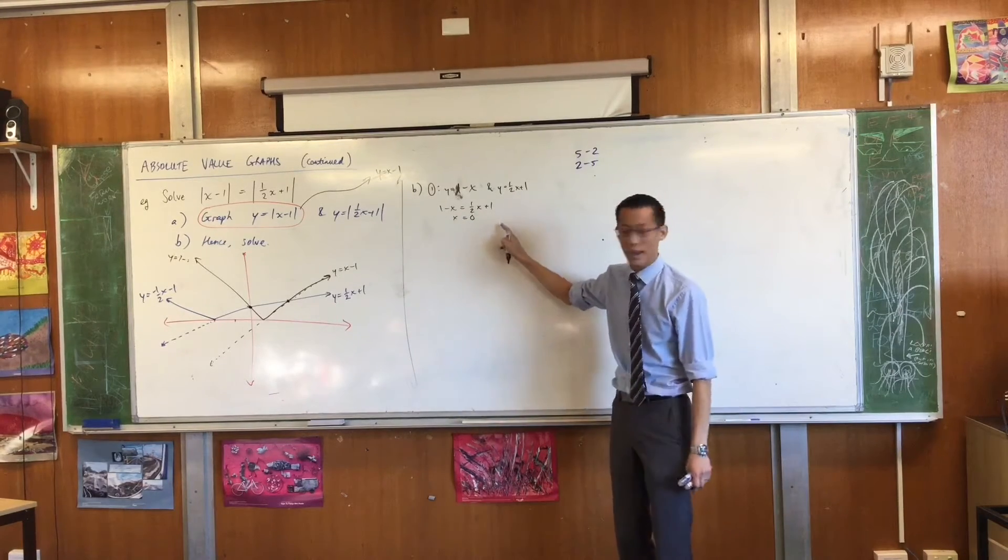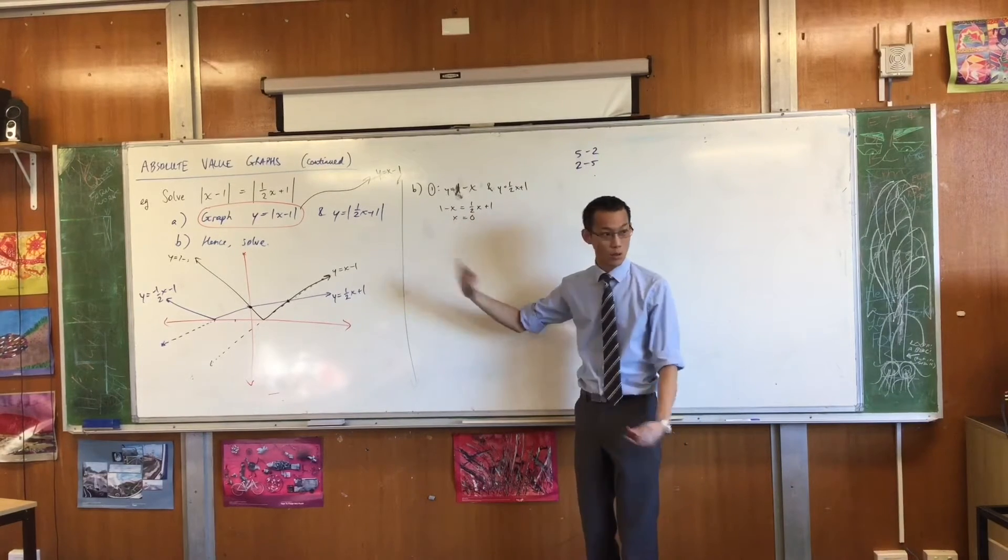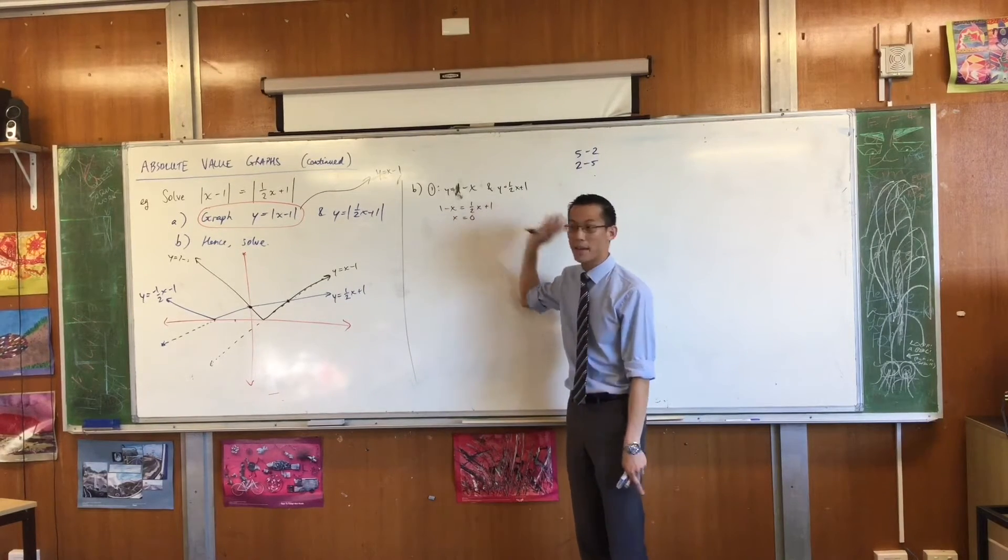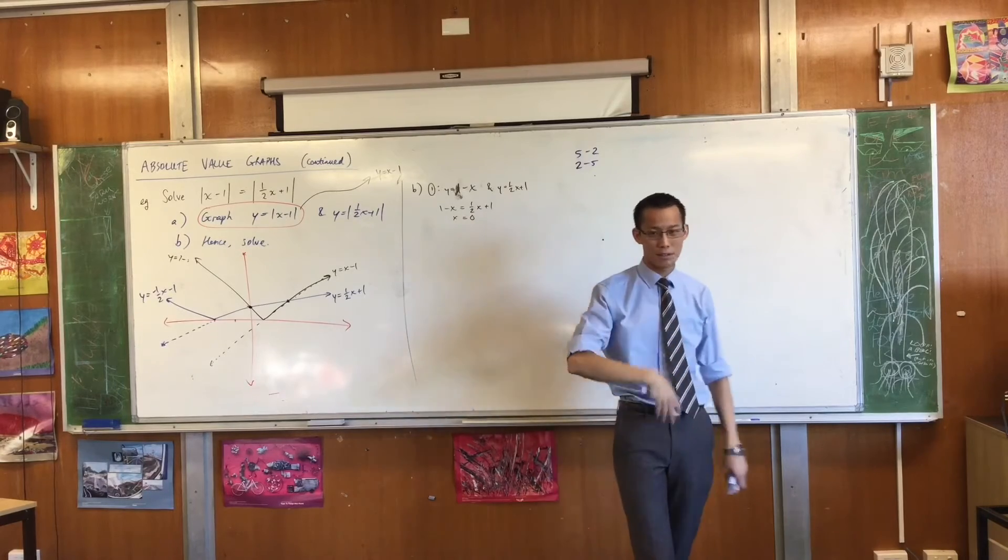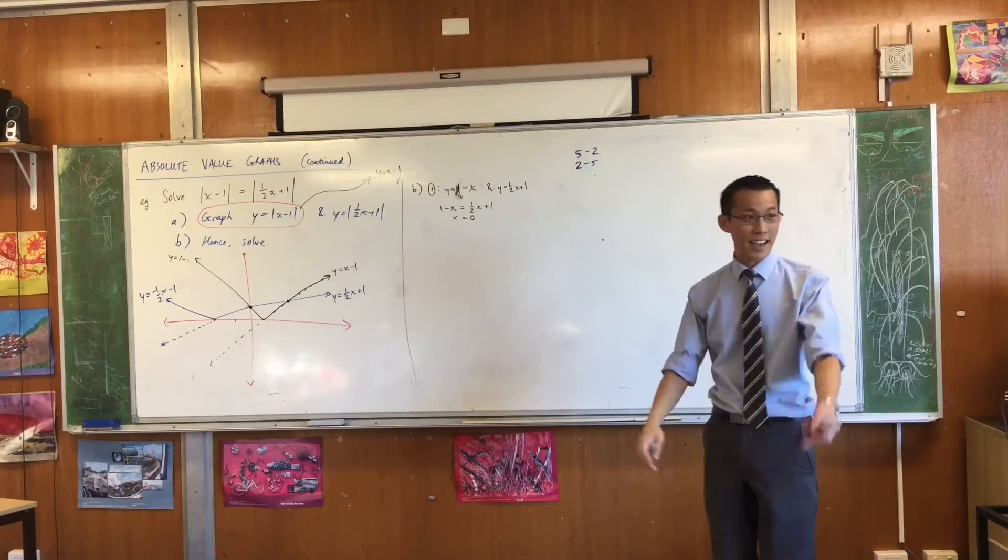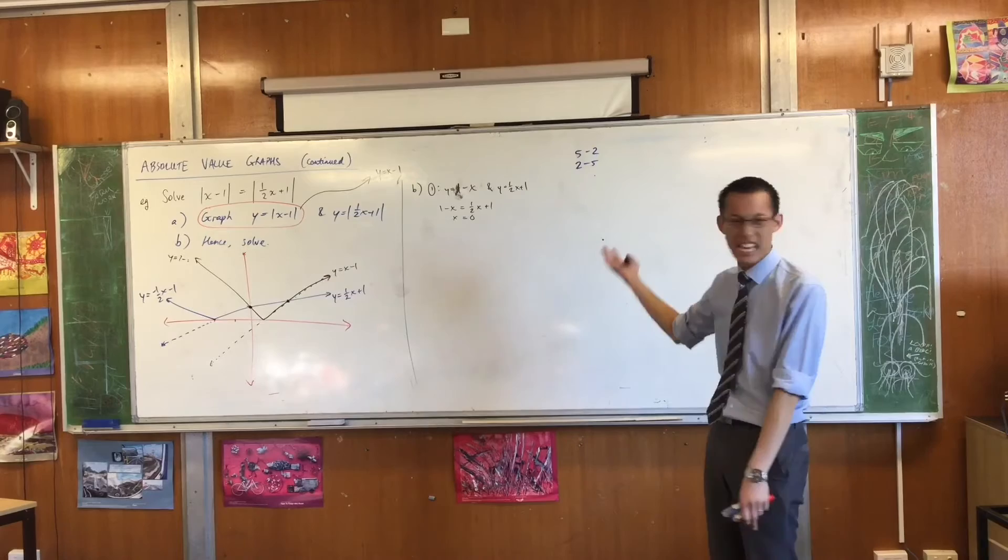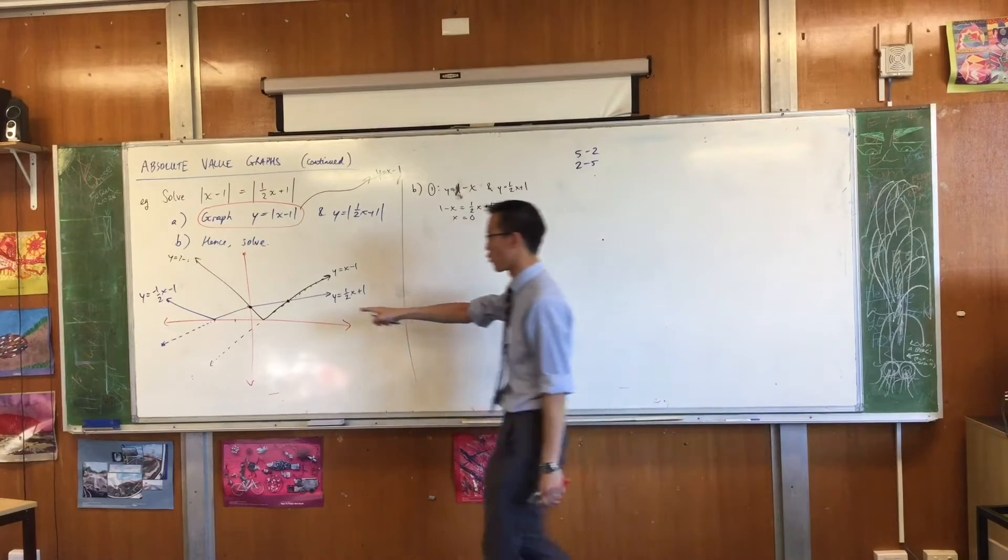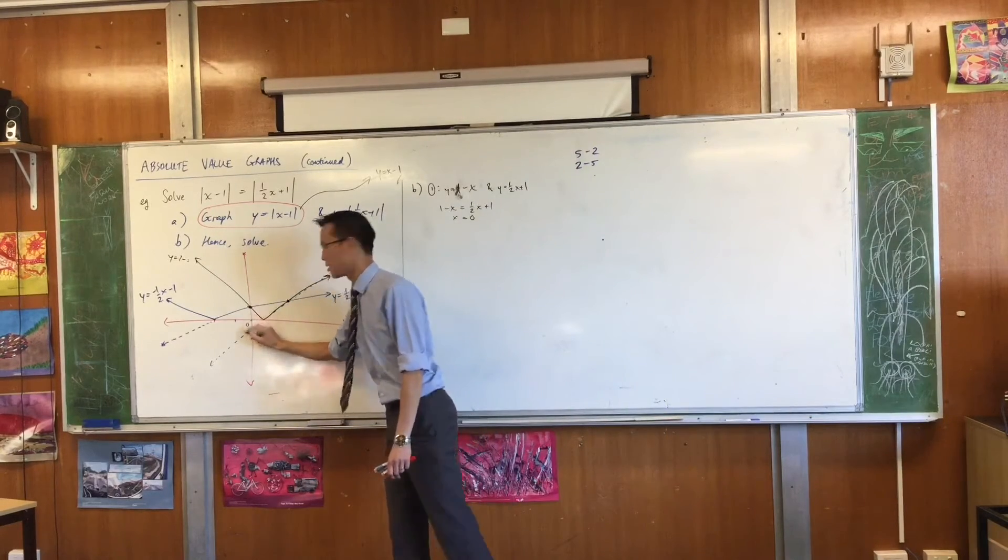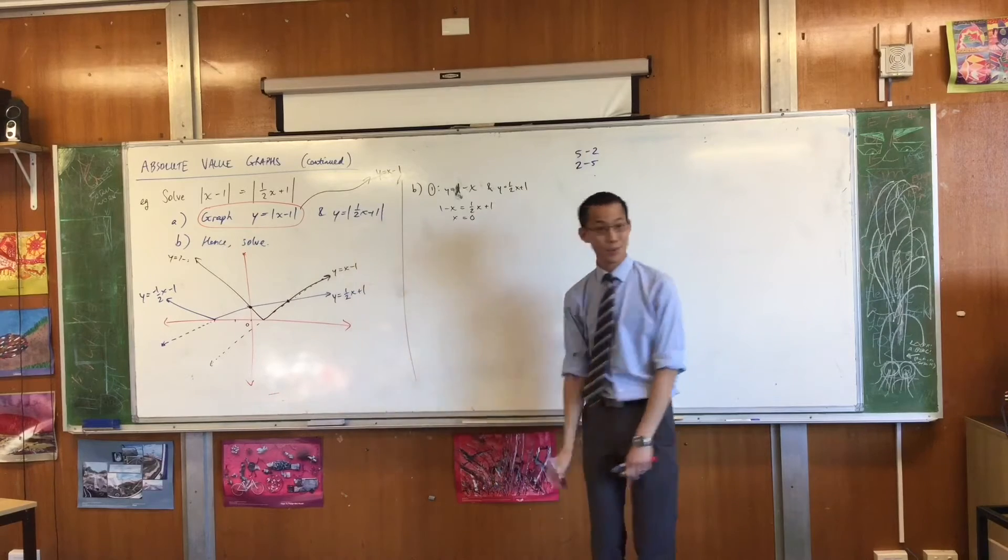You can see that the graph confirms it for you. Do you see what I did, by the way? I subtracted 1 from both sides, which left me with no constant, and then I actually don't care how many x's you've got. You can have half an x, three quarters of an x, 15x. If it's equal to 0, x is 0, right?